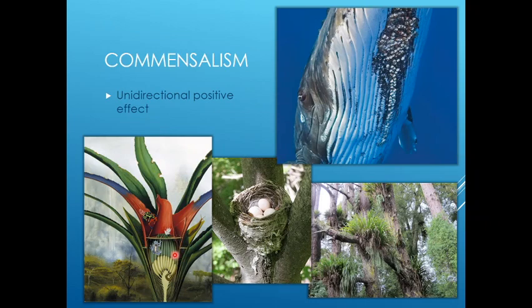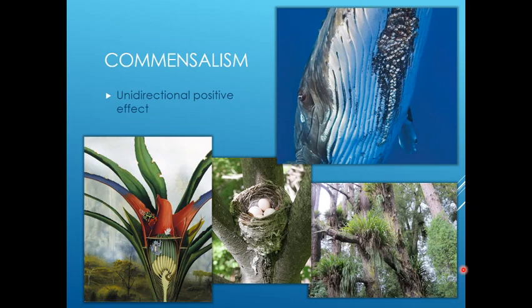Another example is bromeliads — tropical flowers that have a little space that fills up with water. There are whole little food chains that go on in there. Frogs, snails, slugs, worms, and mosquitoes will use them. Those mosquitoes and frogs living in bromeliads don't give any benefit to the bromeliad — the bromeliads don't care — but it doesn't hurt them either. The animals get a place to live, which is obviously very positive for them, but the flowers get no effect.